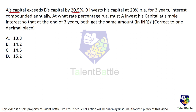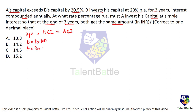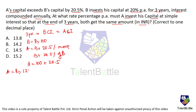A's capital exceeds B's capital by 20.5%. B invests his capital at 20% per annum for 3 years, interest compounded annually. At what rate percent per annum must A invest his capital at simple interest so that at the end of 3 years both get the same amount — correct to 1 decimal place? This means after 3 years, whatever amount B gets based on compound interest will be the same as the amount got by A based on simple interest. Let us assume B invests 100 rupees. A's investment will be B's investment plus 20.5% more — that is 100 plus 20.5, so A's capital is 120.5 rupees.